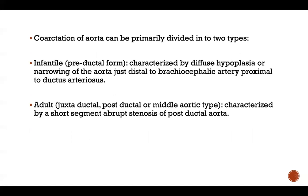Coarctation of aorta can be primarily divided into two types. The infantile type, also called pre-ductal form, is characterized by diffuse hypoplasia or narrowing of the aorta just distal to the brachiocephalic artery and proximal to the ductus arteriosus. The second is the adult type, also called juxtaductal, post-ductal, or middle aortic type, which is characterized by a short segment abrupt stenosis of the post-ductal aorta.